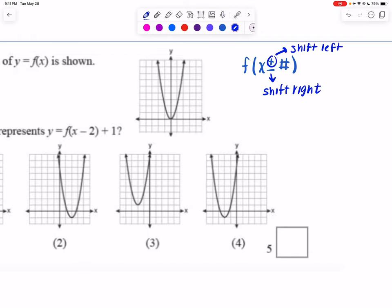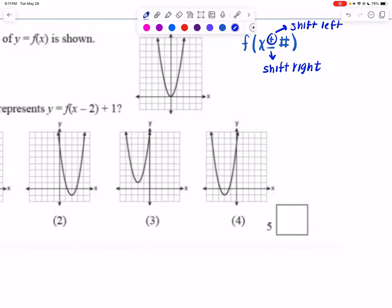Now when I look at the numbers on the outside, so if I have like f of x plus or minus a number, that plus sign means shift up and that minus sign means shift down.